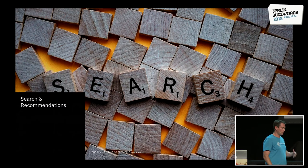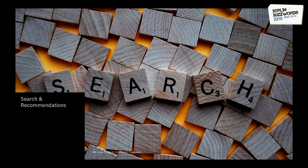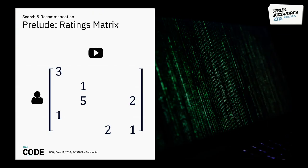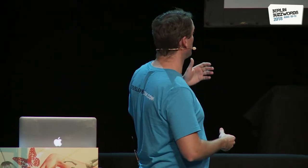That was a brief overview of recommendation engines and what we need to serve them. Now we'll look at core models. The ratings matrix is at the center of most collaborative filtering approaches — a sparse matrix with users as rows and items as columns, where each entry represents a user's interaction or rating. The goal is to fill in the missing entries and predict which items have the highest preference for each user.